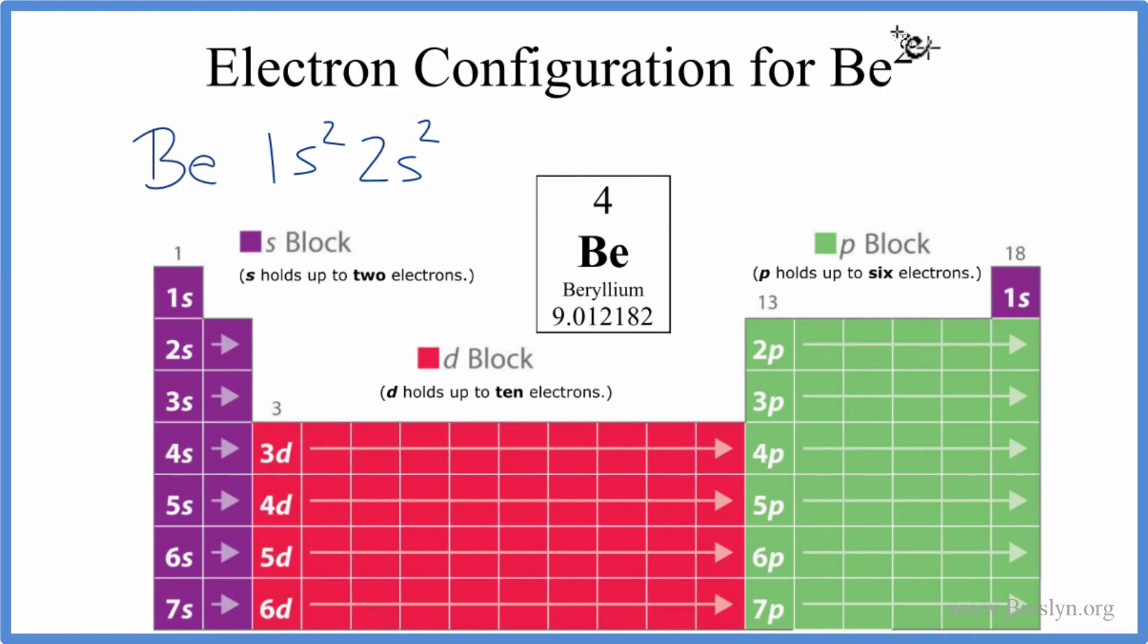But we want to do Be2+, the beryllium ion. So when beryllium becomes Be2+, that means it loses two electrons. It loses two negative charges and that makes it positive, it's a 2+.